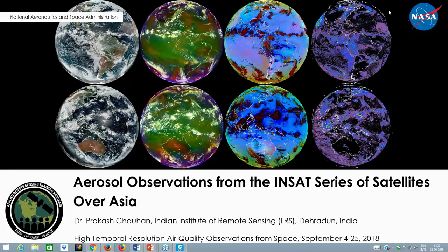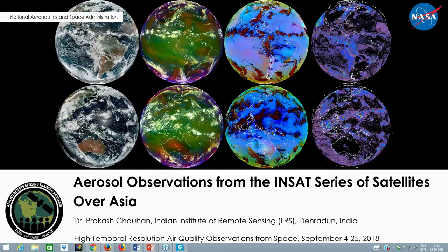Welcome everyone. This is the last webinar in the series looking at geostationary datasets for air quality monitoring around the world. In weeks one, two, and three we saw data from the U.S. geostationary satellite GOES-R, the Japanese Himawari, and the Korean GOES satellite. Today our speaker is Dr. Prakash Chauhan, Director of the Indian Institute of Remote Sensing (IIRS), Dehradun, India. Dr. Chauhan has been working with ISRO India for more than 25 years, with extensive experience in using INSAT series satellite data for air quality applications.